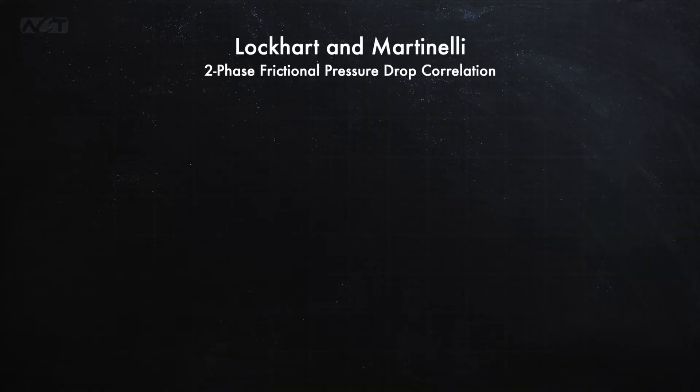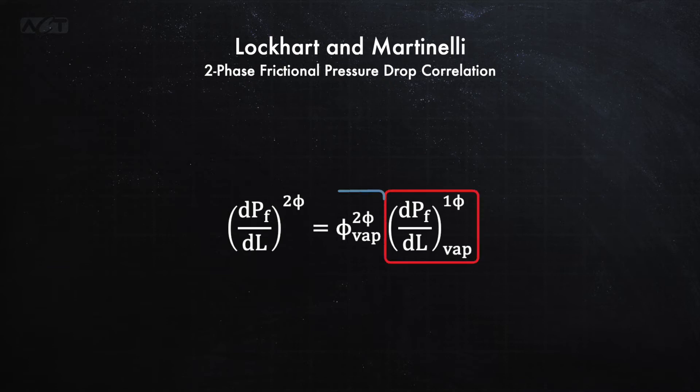For the regions with 100% liquid or vapor flow, standard Darcy friction factor equations are used for the tubular flow frictional pressure drop. However, in the two-phase flow regimes, the pressure drop calculations are a bit more difficult, and so we had to use some empirical correlations. Lockhart and Martinelli introduced what is probably the most widely used correlation, and this correlation adjusts the vapor phase pressure drop by a flow-dependent correction factor to arrive at the two-phase frictional pressure drop.